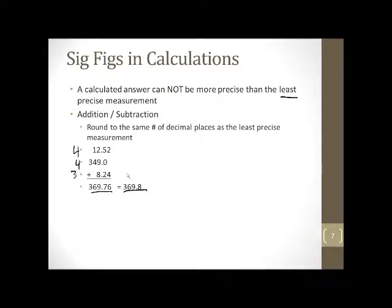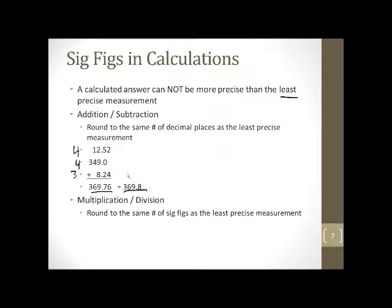Now, multiplication and division are quite a bit different. Here, you're round to the same number of significant figures as the least precise measurement. Addition and subtraction is the same number of decimal places. Multiplication and division is the least number of significant figures. So let's say we do 2.4256 times 8.4. How many significant figures here? Five significant figures. But here, there's two significant figures. So we plug it into a calculator. We get 0.291976. However, since our least precise measurement had two significant figures, that's all we can put in our answer. So we have to round it to 0.29.